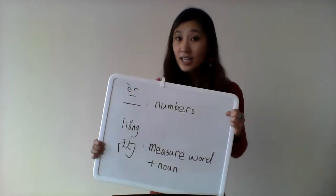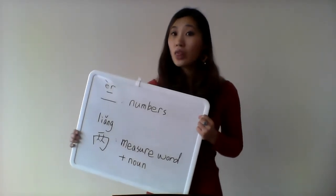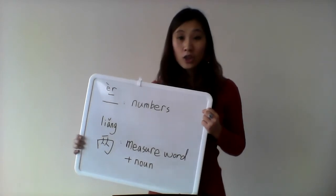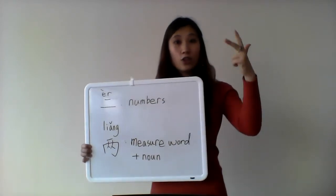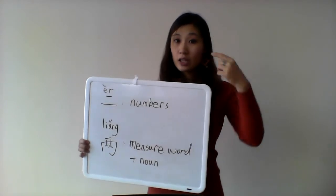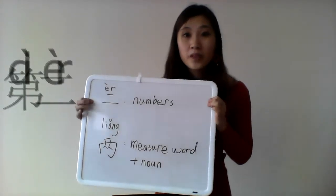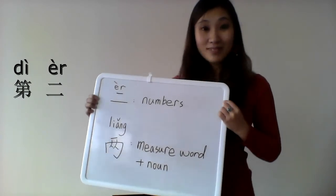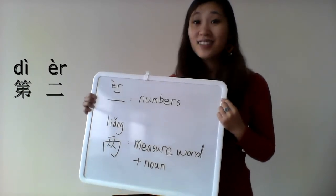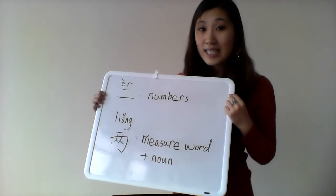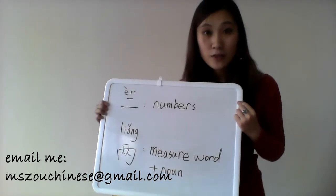There is another thing. How about the second? The first, the second, the third. How about the second? Which one am I using? Use the first one. Dì èr. Dì èr means the second. Because it's actually talking about the numbers.